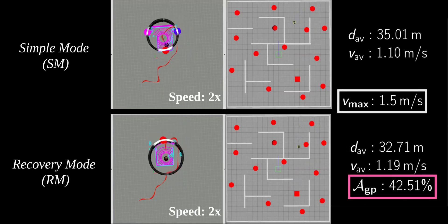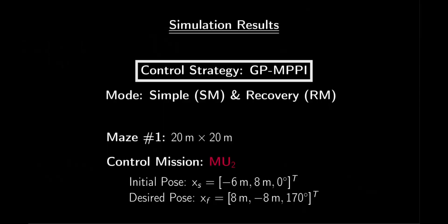In this trial, the assistance provided by GP to MPPI when the recovery mode is utilized exceeds 42%. Here, we are rerunning the simulations for the second mission, MU2.